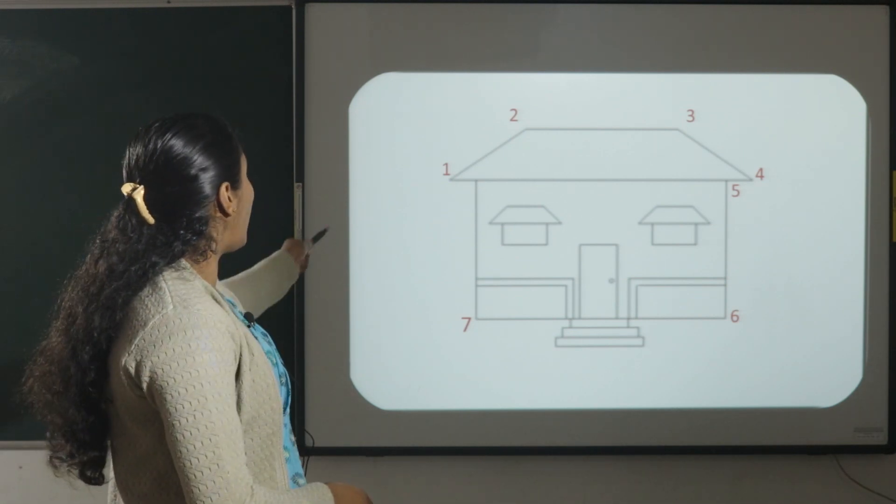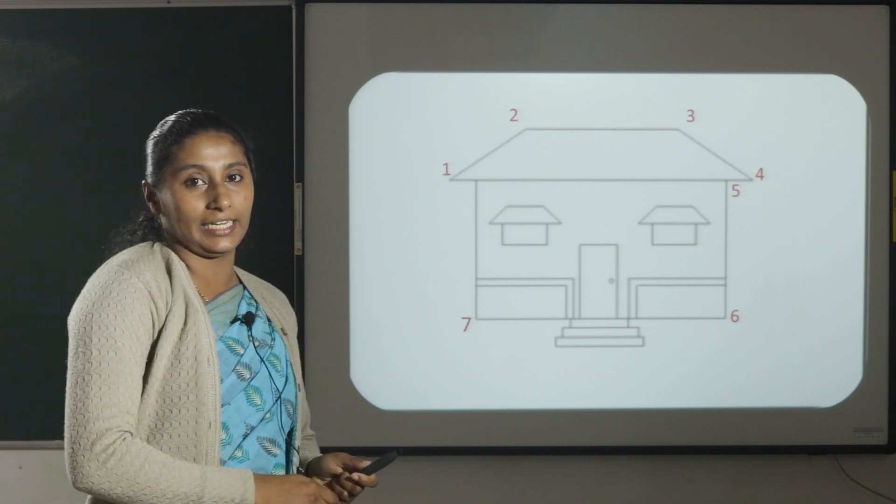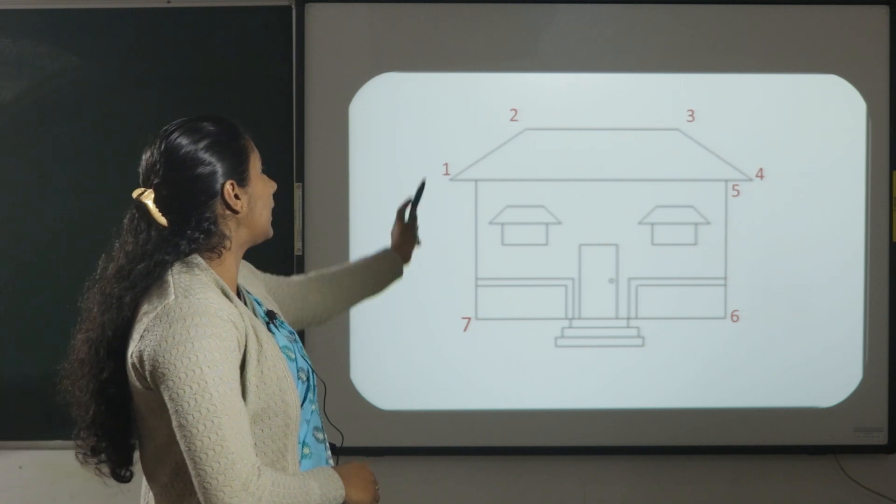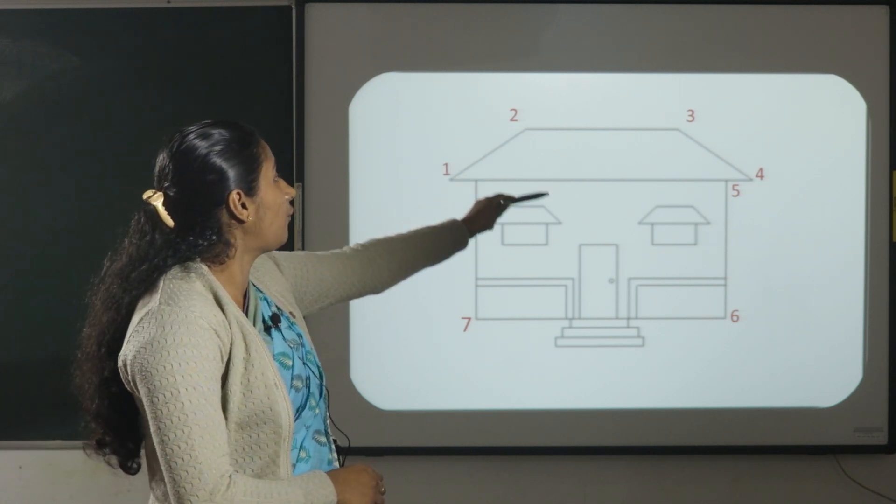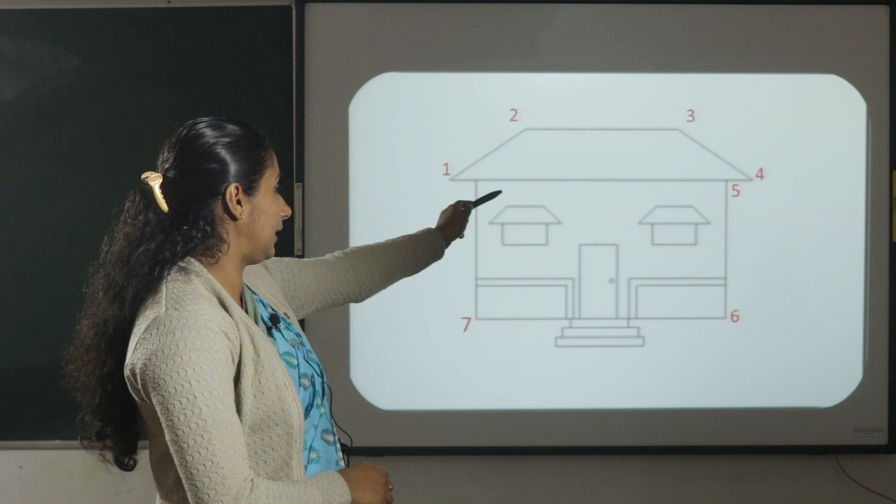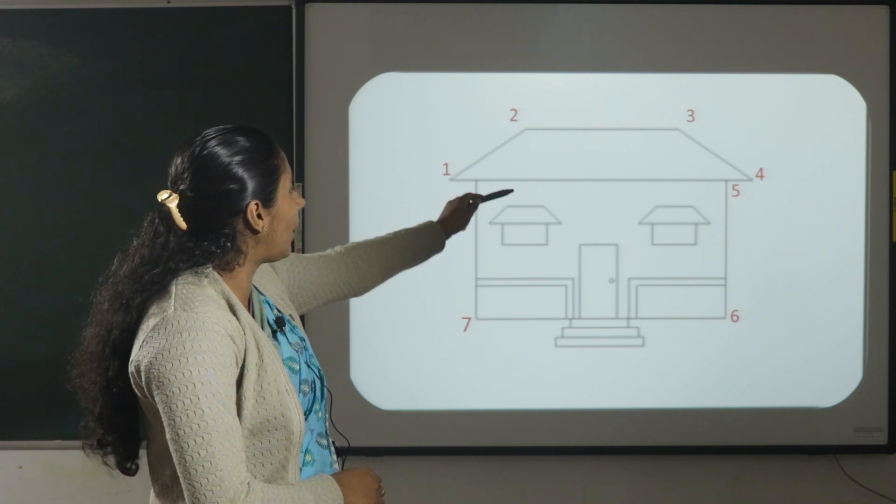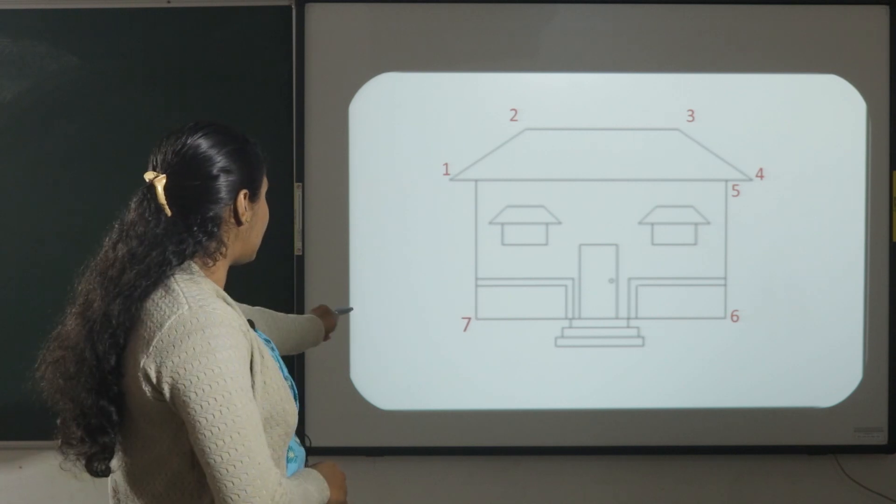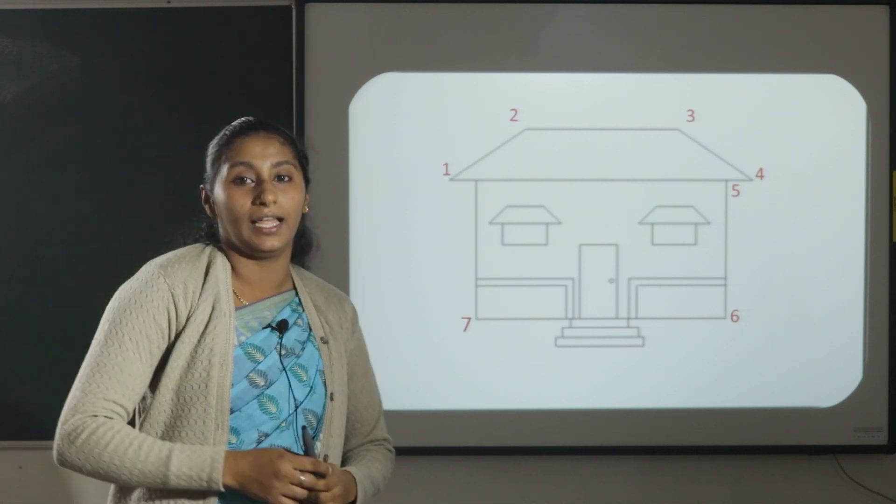The line from one to two is the right slanting line and the line from two to three is the horizontal line and the line from three to four is the left slanting line and the line from five to six is the vertical line and the line from six to seven is the horizontal line.